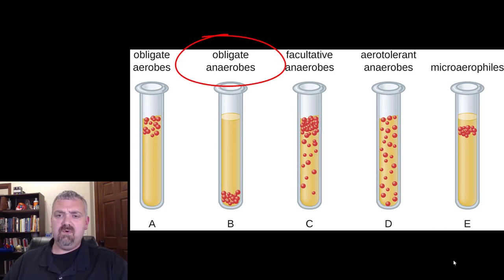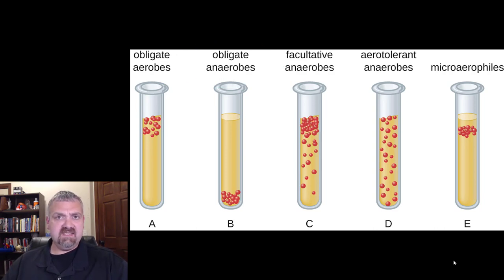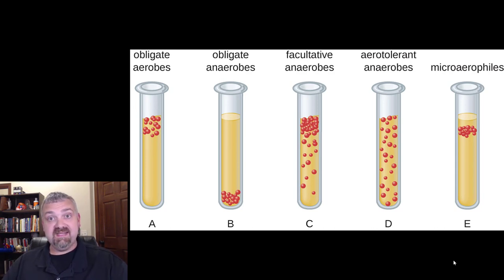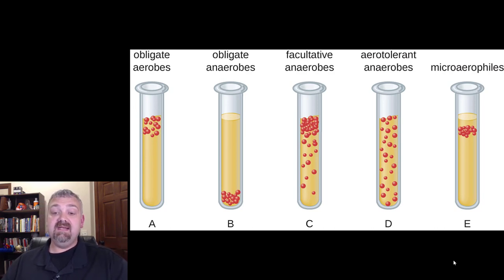Next we have the obligate anaerobes. These cannot live in the presence of oxygen — they don't have the enzymes to neutralize the toxic forms of oxygen that are created. So if you put an obligate anaerobe anywhere near oxygen, the oxygen will kill it. That's what I meant about oxygen being toxic; we just find ways to deal with it. Obligate anaerobes are only going to grow at the bottom of one of these test tubes.